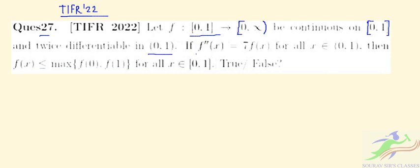If f''(x) = 7f(x) for all x ∈ (0,1), then f(x) ≤ max{f(0), f(1)} for all x ∈ [0,1]. Is that a true statement or false?